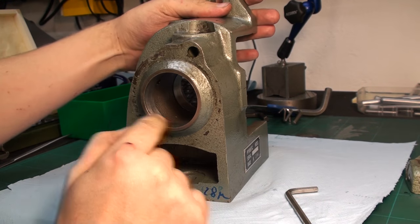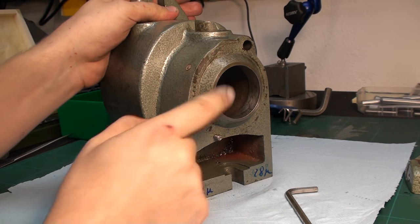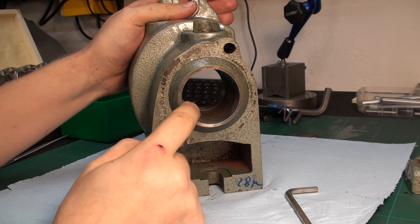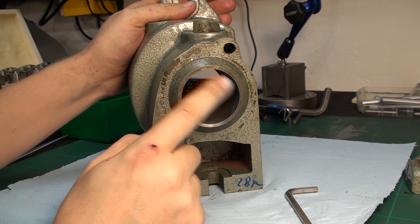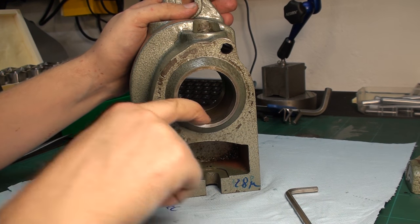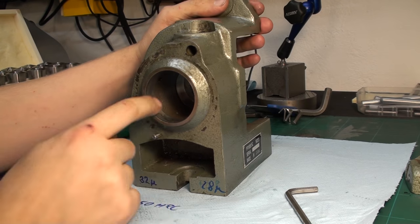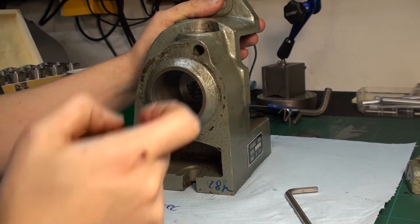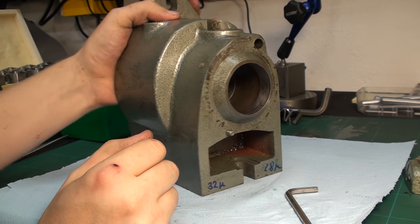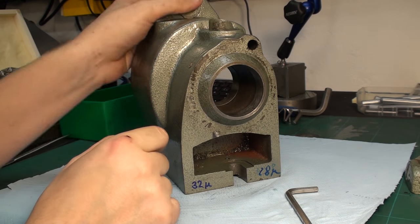And as you can see in here, we have the tapered bearing, plain bearing for the spindle. And they scraped it. They scraped it. Let's break out some high spot blue and check the taper for fit.